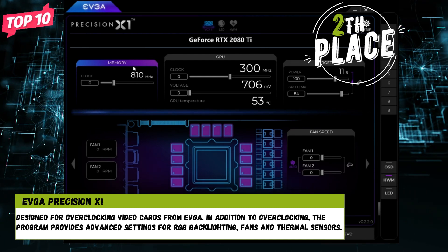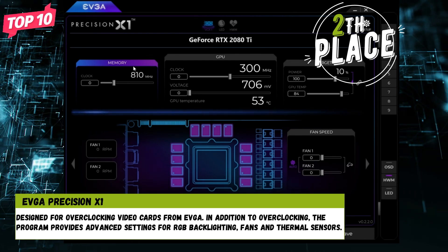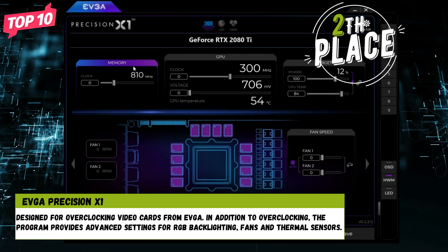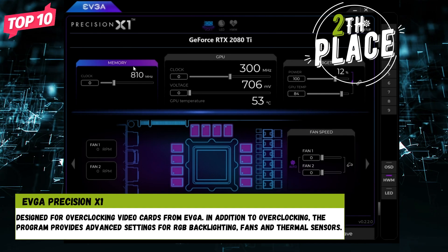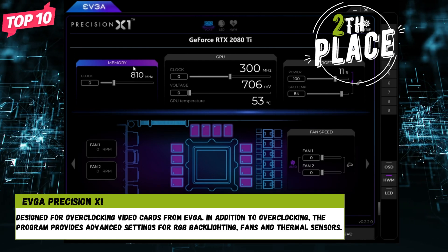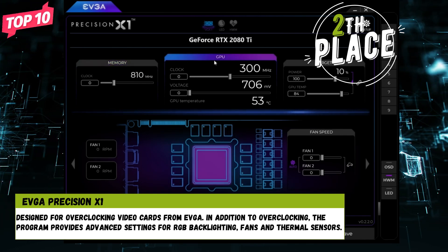In the runner-up spot: EVGA Precision X. Designed for overclocking video cards from EVGA. In addition to overclocking, the program provides advanced settings for RGB backlighting, fans, and thermal sensors.